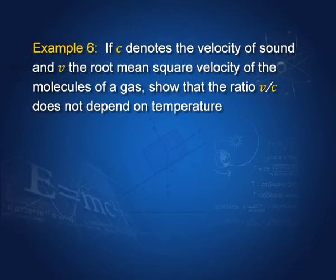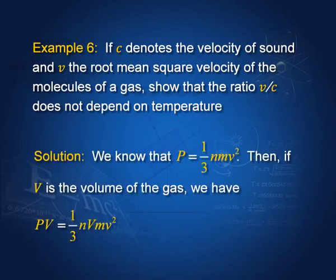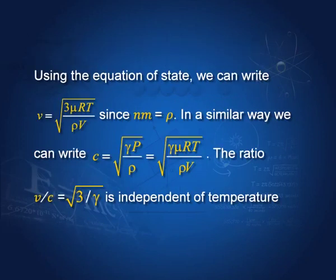Example: if C denotes the velocity of sound and v the root mean square velocity of gas molecules, show that the ratio v by C does not depend on temperature. We know p equals one-third nm v-squared from kinetic theory. Multiplying by V gives pV equal to one-third nm v-squared times V. Using nm equal to density rho and the equation of state pV equal to RT, we get v equal to square root of 3μRT by pV. Similarly, C equals square root of gamma p by rho.